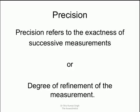Whereas precision is about exactness of successive measurements. So this is about refinement of the measurements. Every time you actually do a measurement it is almost the same. It's not different. That is what is precision.